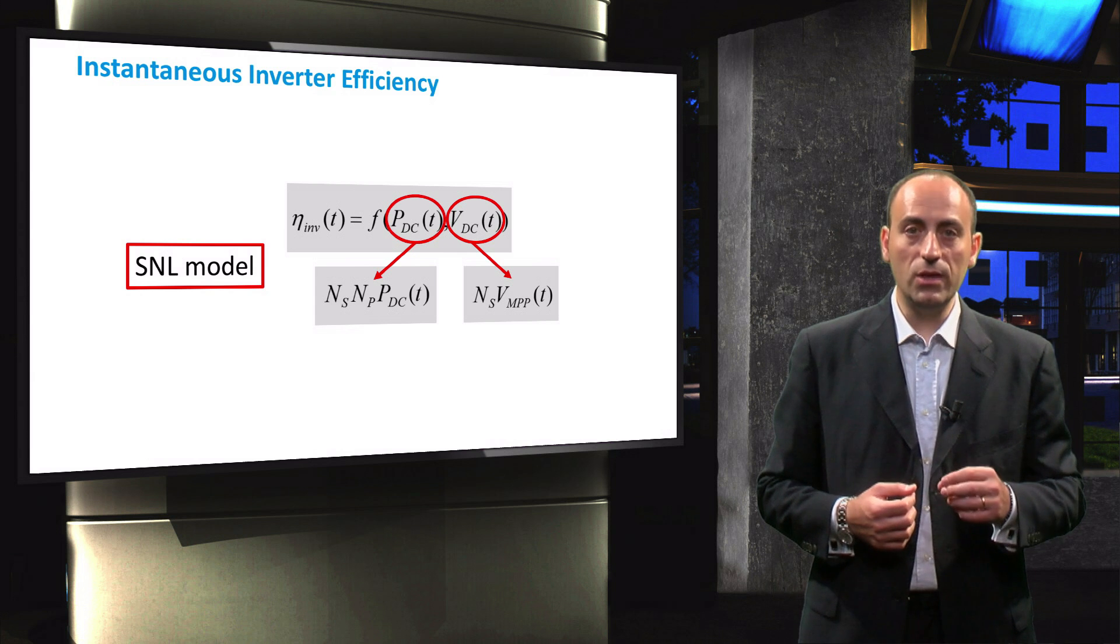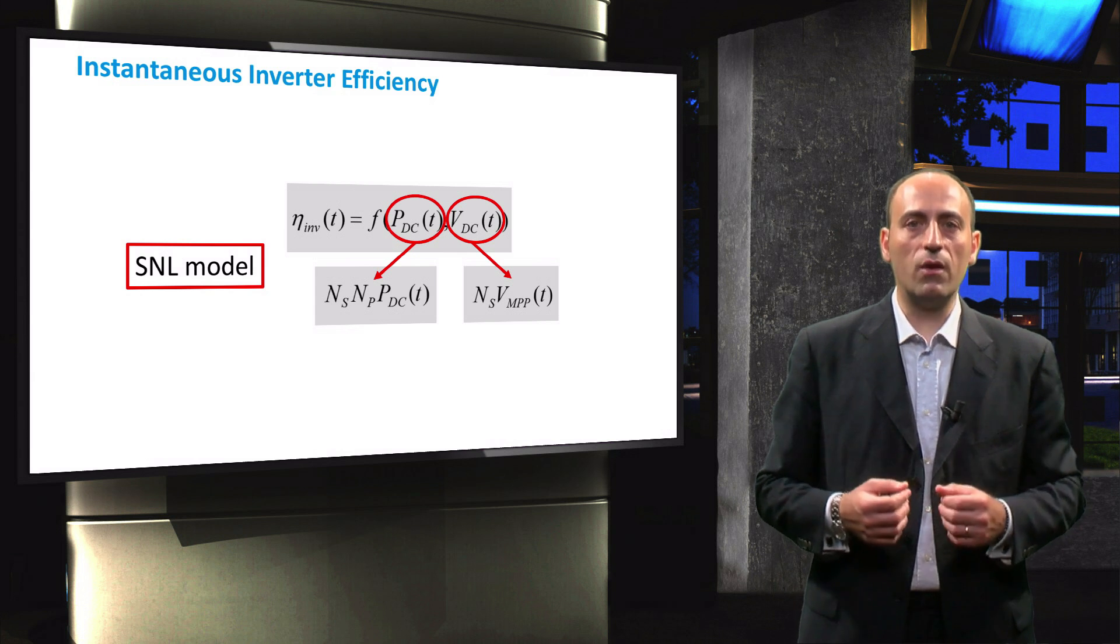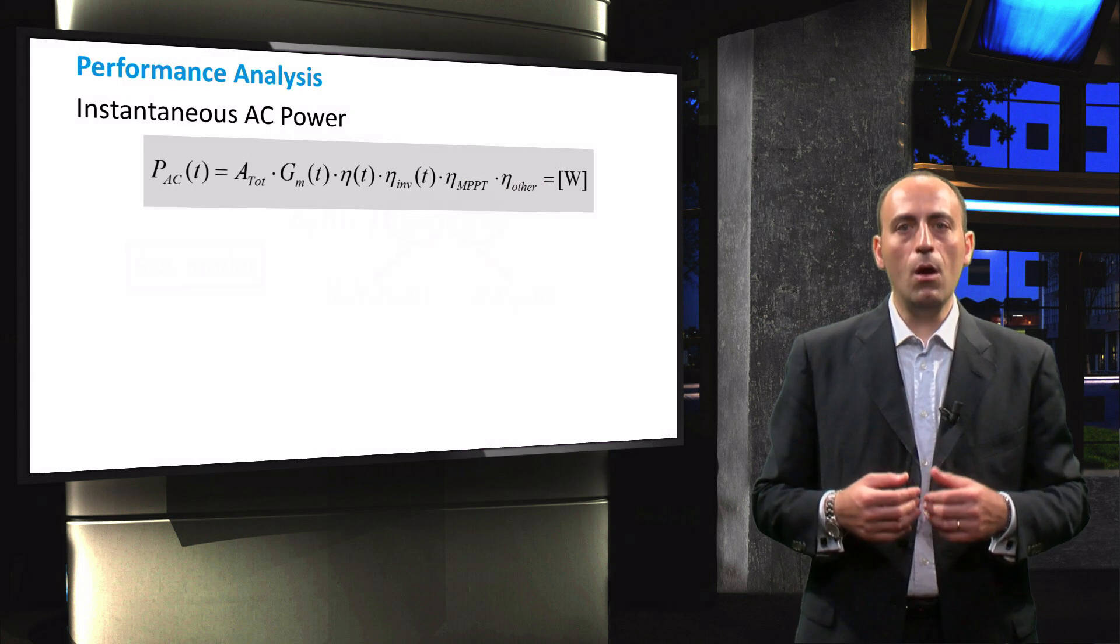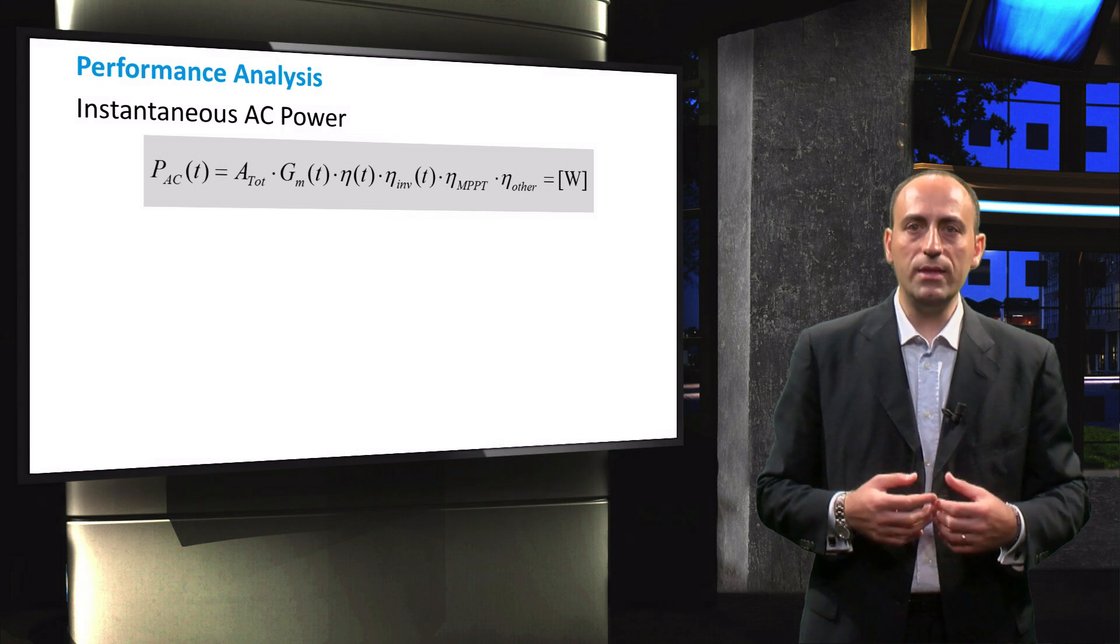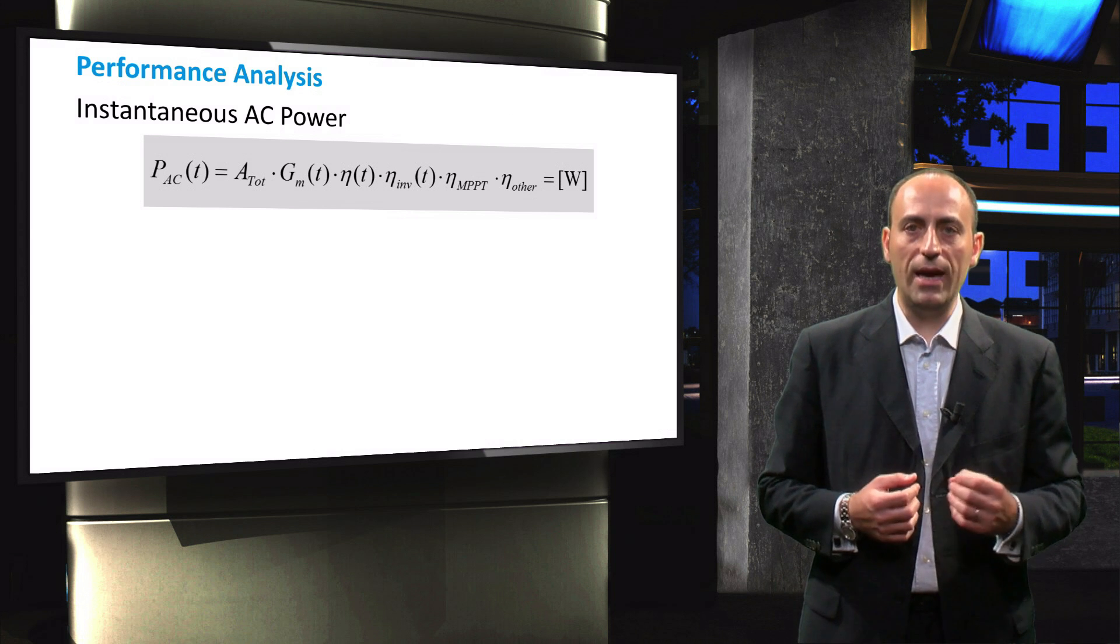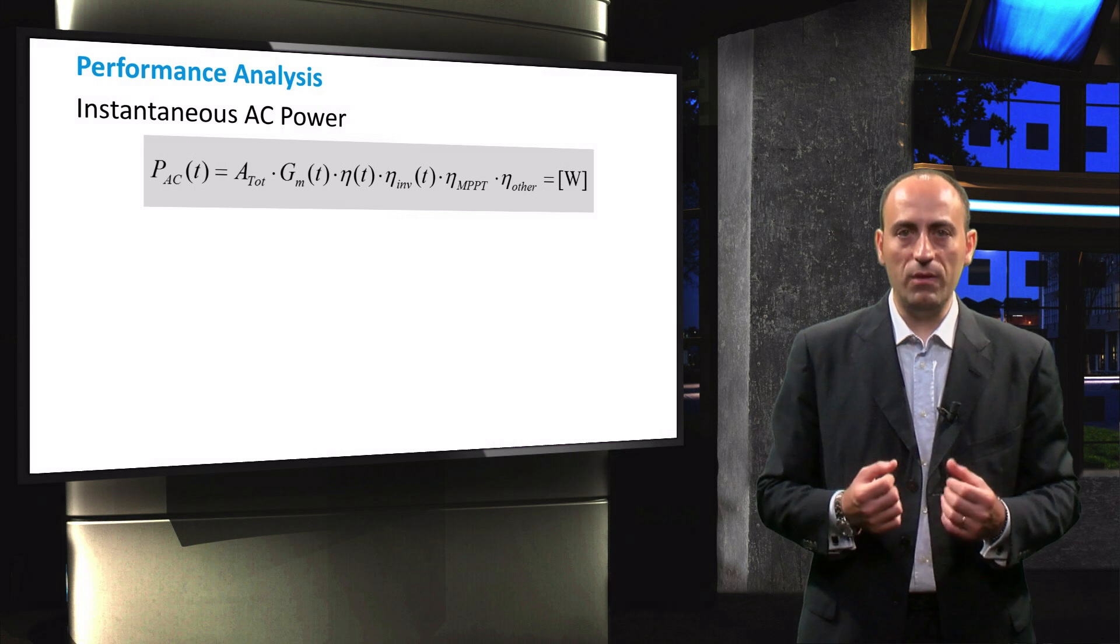This model is explained in detail in section 20.4.1 of the solar energy book. We can now determine the overall performance of the PV system. We start with the instantaneous AC power generated by the PV system.